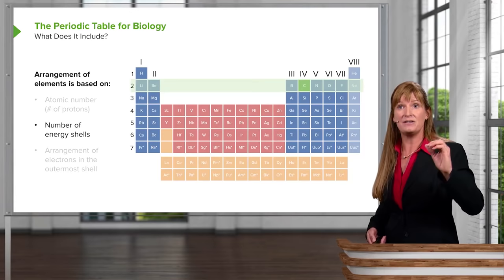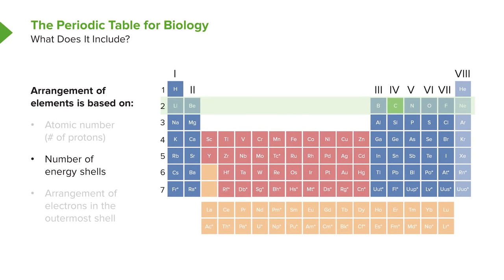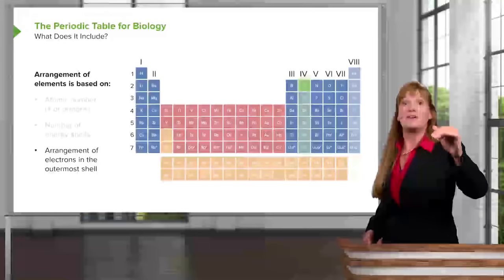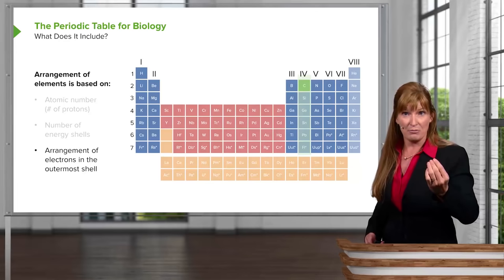Oxidation and reduction — or redox reactions — are something that we're going to run into frequently throughout this course. We can't leave the periodic table out of the conversation when we're talking chemistry. As biologists, we only have to look at the first three periods, and these first three periods correspond with the three energy levels we've talked about previously. Let's look at carbon, for example. Carbon is atomic number six, which means by definition it has six protons. We also see that it has an atomic mass of 12, which tells us that there are also six neutrons.